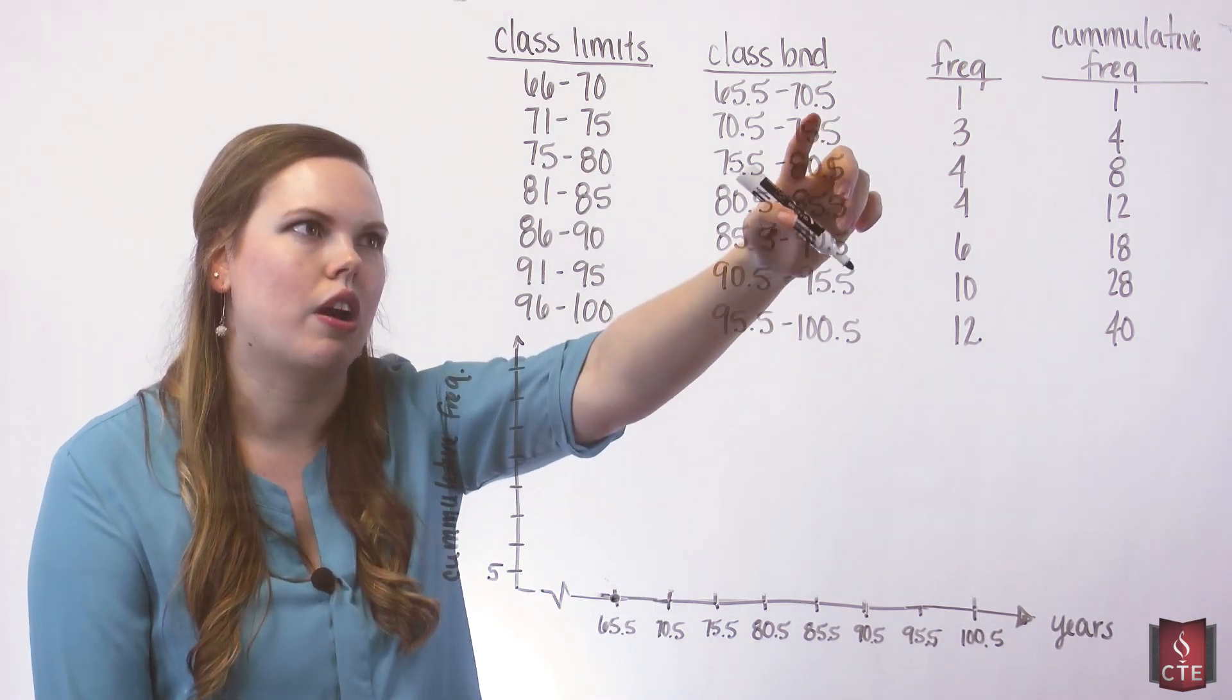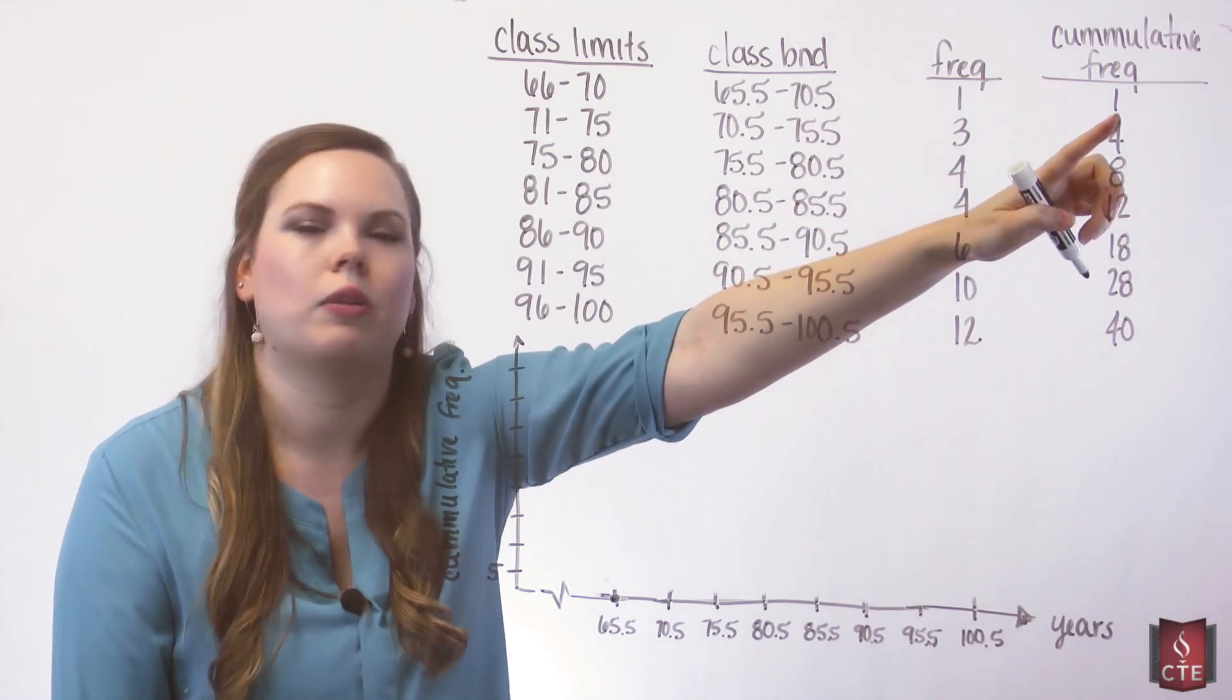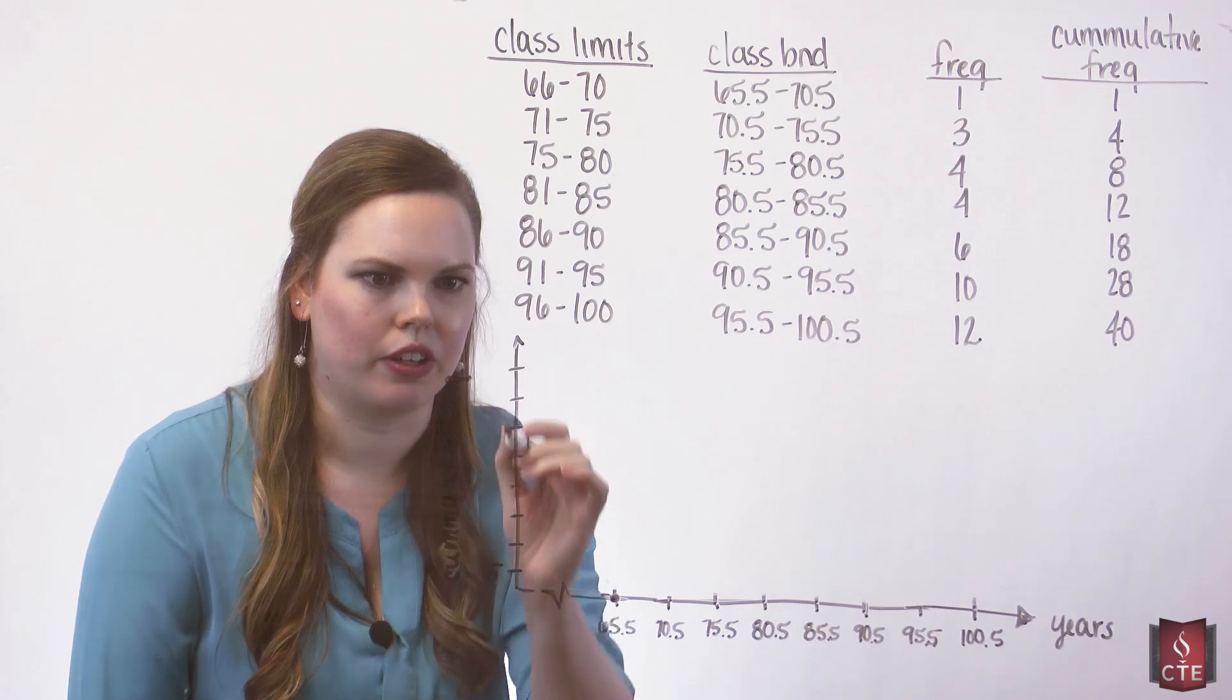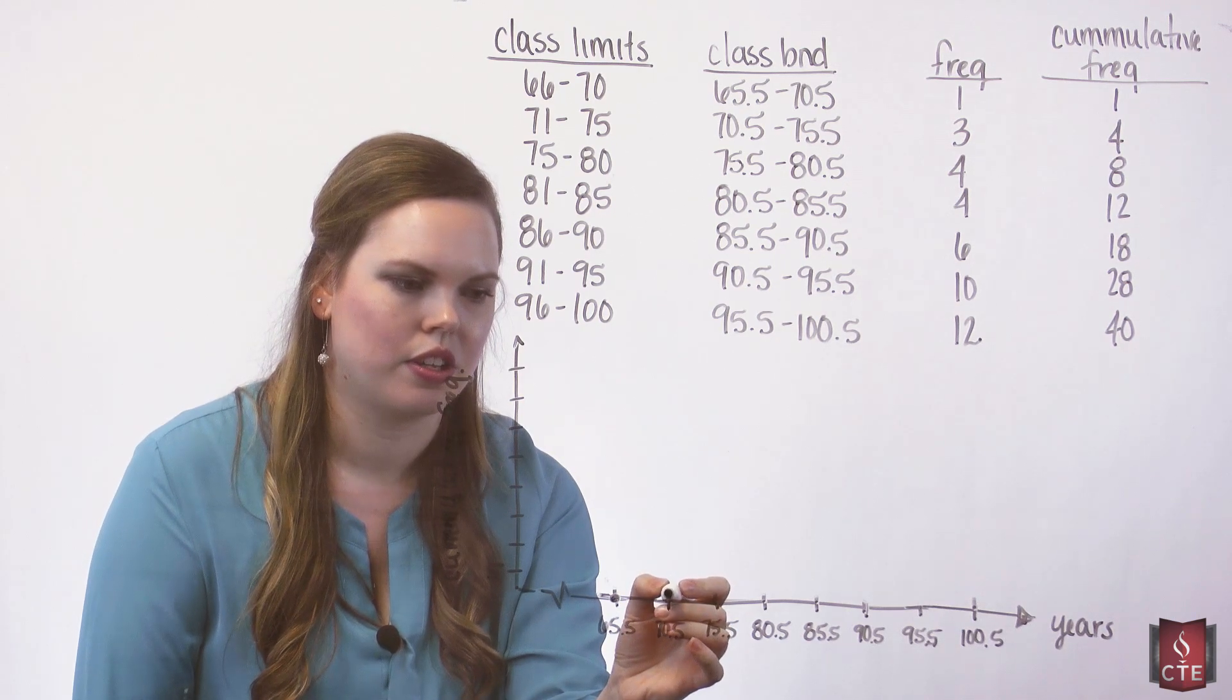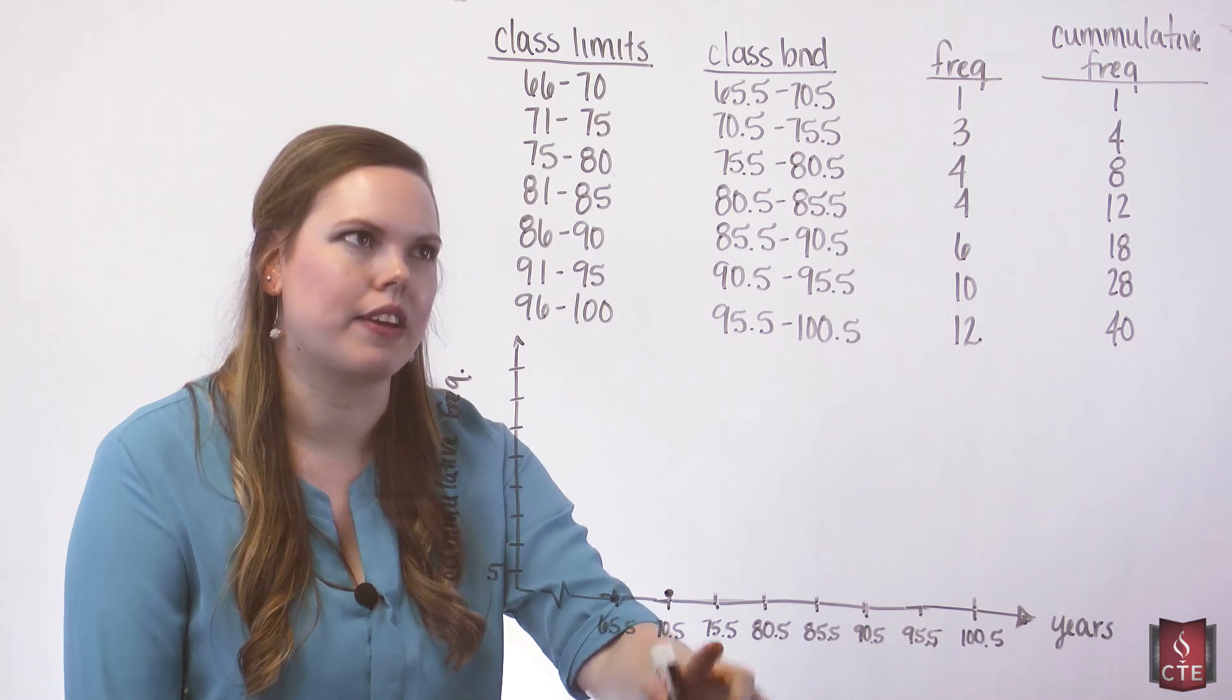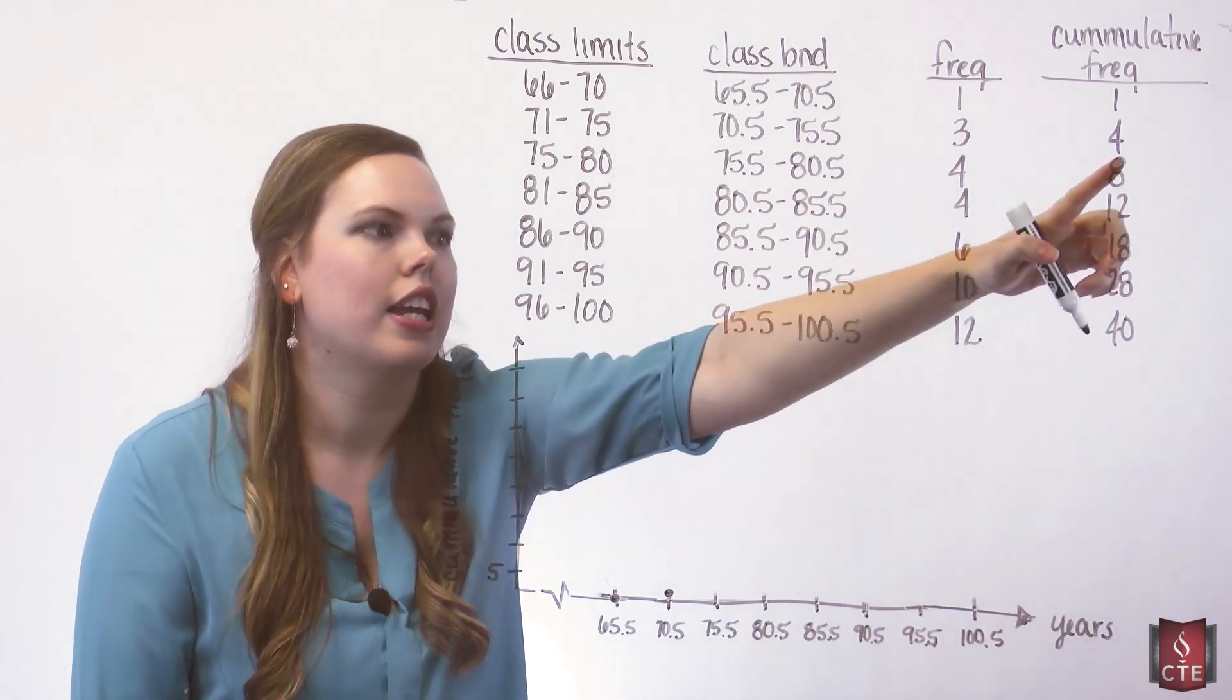And then as we move to our next point, 70.5, we'll use our cumulative frequency of one. I'm counting by fives on my vertical axis here, so this is just very close. And then we move up at 75.5. The number of data values less than it is four.